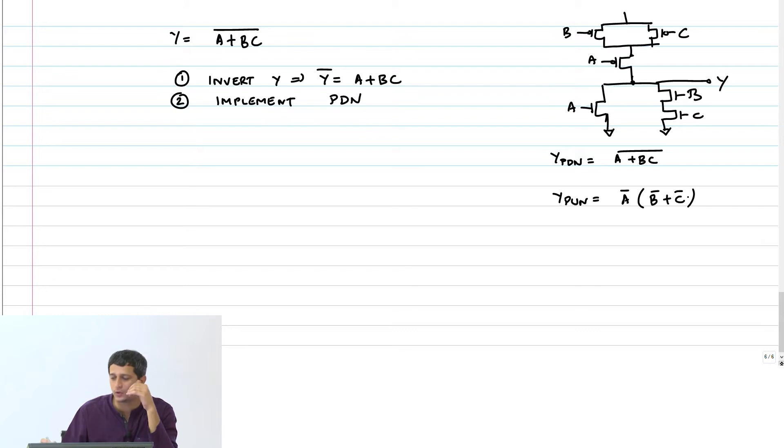Note that these two are Boolean equivalents. De Morgan's laws—I can take the complement inside, make AND or OR and AND, and these two are the same. This is your check. Eventually both of these things should be the same.